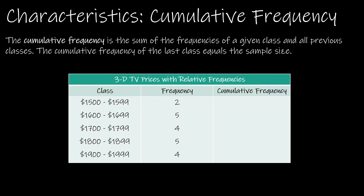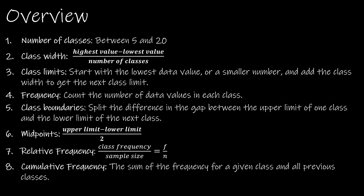The cumulative frequency is not used as often, but it means all values up to and including that class. For the first bin it equals the frequency — 2. For the second it's 2 + 5 = 7. Then 2 + 5 + 4 = 11, then 16, then 20. The last cumulative frequency value should always equal n, the sample size. This overview covers everything we've discussed about frequency distributions.